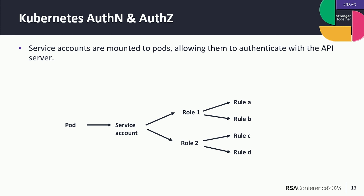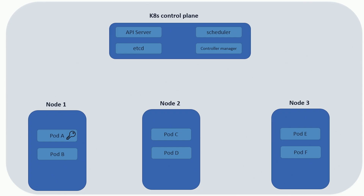We usually use service accounts by attaching them to pods, allowing the pod to authenticate with the API server. The full chain is: a pod has a service account attached to it, the service account can have several roles bound to it, and each role has several rules — for example, a permission to create new pods or read secrets. You can see in the cluster diagram that pod A has a service account, and with it pod A can authenticate with the API server.